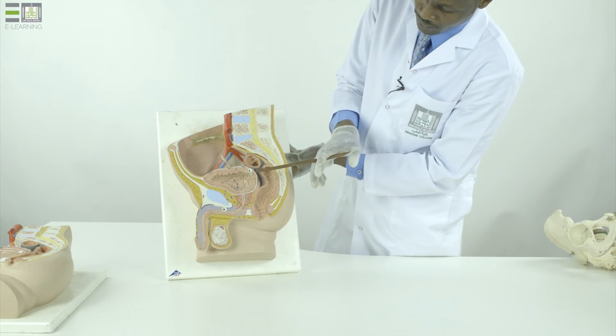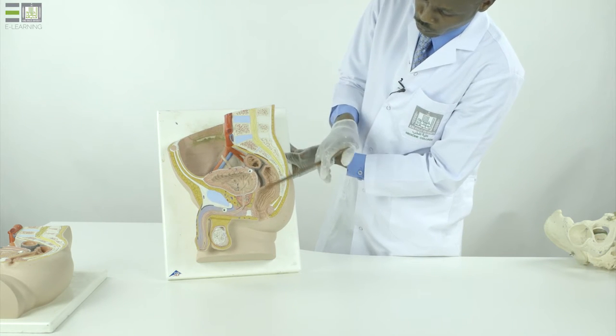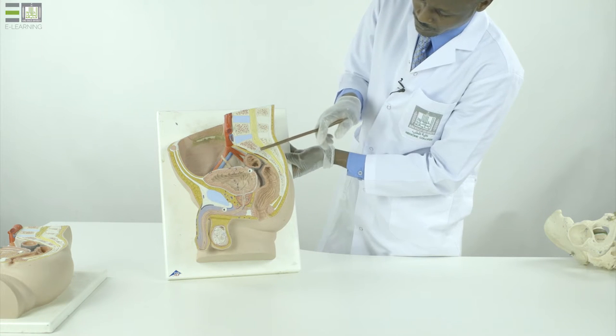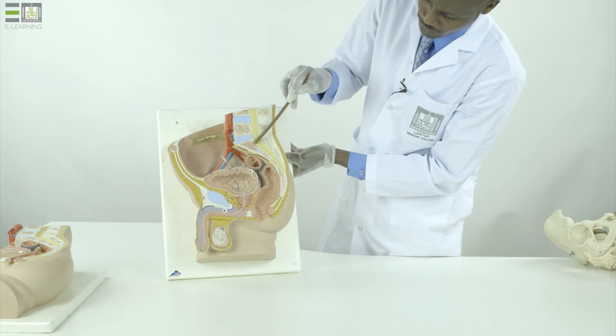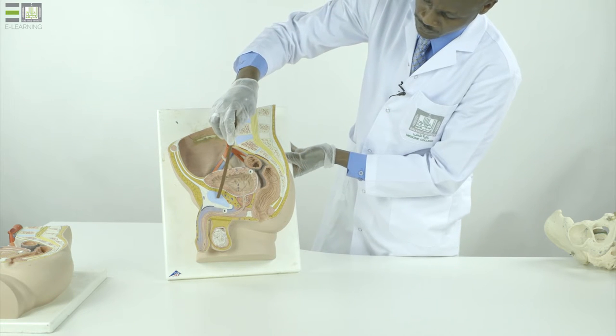This is a sagittal section within the male pelvis to show the structures which appear in the midline. The sacrum and coccyx posteriorly. This is the symphysis pubis anteriorly.